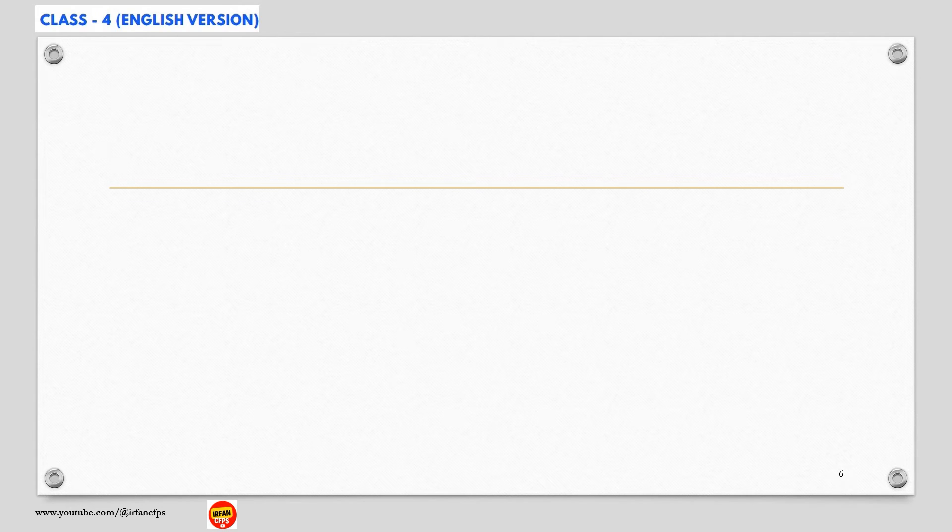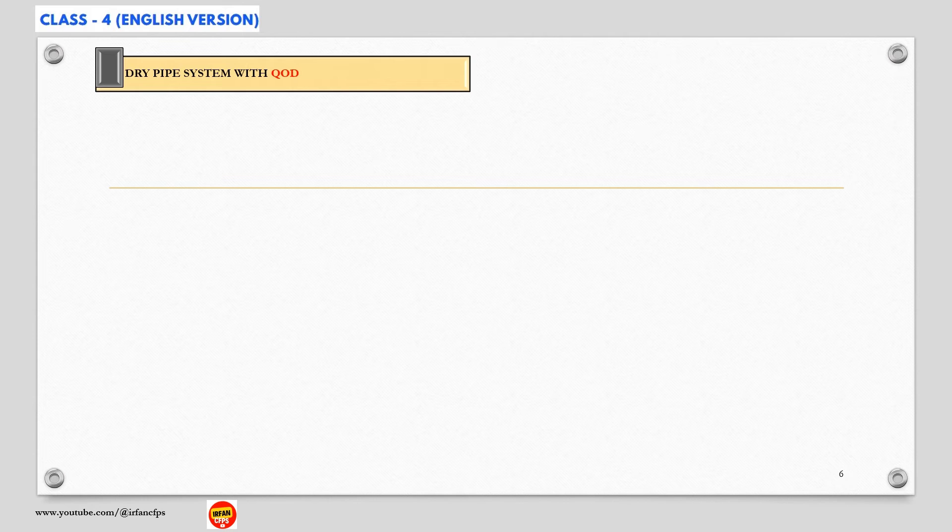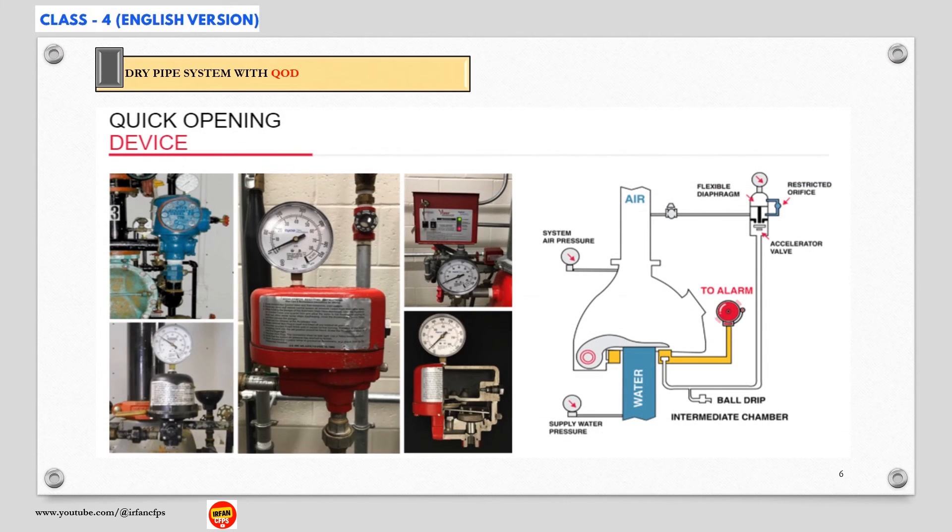Dry pipe systems operate on a differential principle in which the system is equipped with a differential valve that allows lower air pressure to hold back higher water pressure. This system is installed with a quick opening device called accelerator.